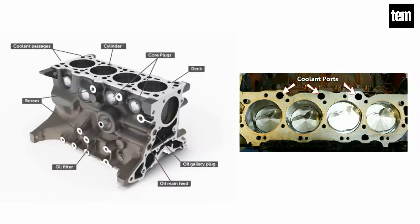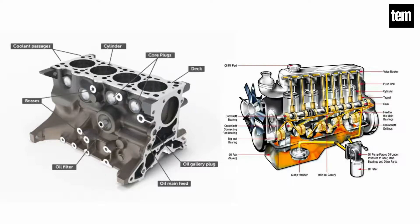Coolant passages are provided in the cylinder walls for the circulation of cooling water. Cylinder block also carries lubrication oil to various components through drilled passages that are called oil galleries.